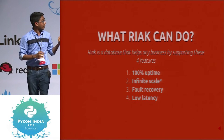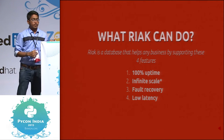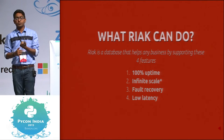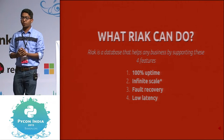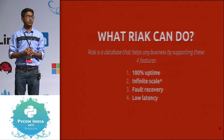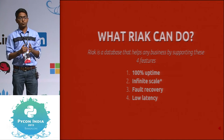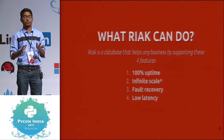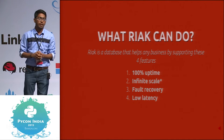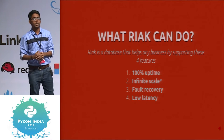There are a few technologies which can handle the equivalent of Amazon, but Amazon is doing that because of one technology — DynamoDB. It's the paper released by Amazon in 2007. Riak is an open source implementation of DynamoDB. It is capable of doing all the things that Amazon's Dynamo can do.